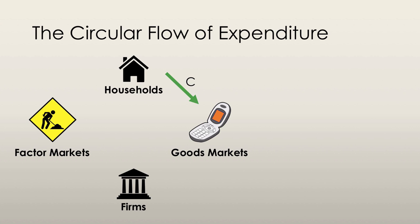Households spend their money in the goods market, and this is known as consumption expenditure. All of this money goes directly to firms. Firms also purchase goods and services in the goods market, and this is known as investment. The goods and services that firms produce is capital, but other firms make that capital and sell it in the goods and services market. So when firms invest, they're still purchasing goods and services from the goods market — though it goes to a different firm that makes these capital goods.